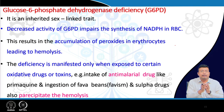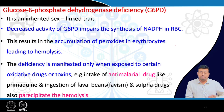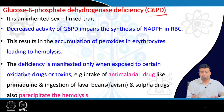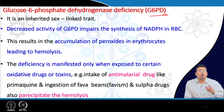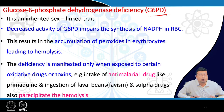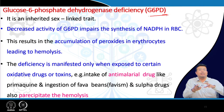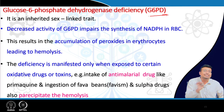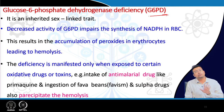For production of NADPH, the key enzyme is glucose-6-phosphate dehydrogenase (G6PD). Knowing all the beneficial roles of NADPH, you can easily guess what will happen if there is a deficiency of G6PD.